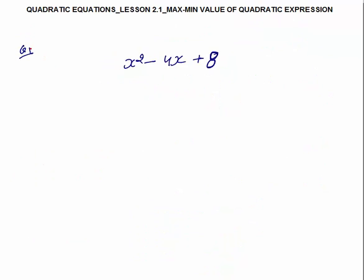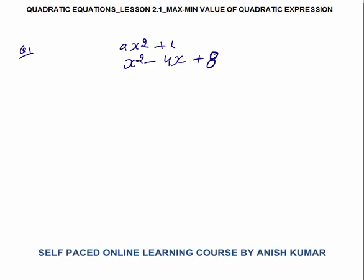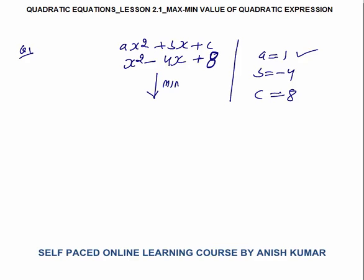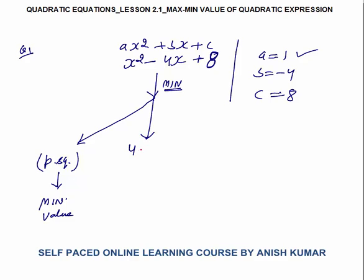Now question 1: x² − 4x + 8. First compare this with ax² + bx + c. You can see that a = 1, b = −4, and c = 8. As a is positive, you can't determine the maximum value; this quadratic expression will have a minimum value. Maximum value will be infinite. One way is to make a perfect square as discussed in lesson 1. Or you can apply the formula: (4ac − b²)/(4a). Put the values: 4 × 1 × 8 − (−4)² all over 4 × 1. So you get (32 − 16)/4 = 16/4 = 4. So the minimum value is 4.